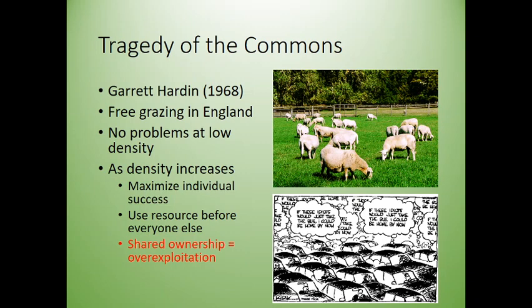But as we get more and more sheep ranchers, it gets more and more crowded. The way to maximize your individual success — to get the most grass for your sheep for free — is to use that resource quickly before everyone else. I think this idea is clear as a traffic jam. You can see everyone is saying, 'If these idiots would just take the bus, I could be home by now.' Everybody's using that resource, and then it's no good for anybody.